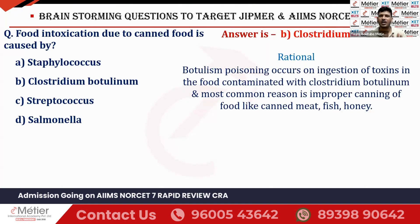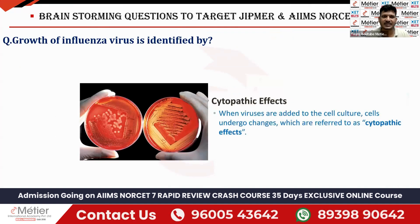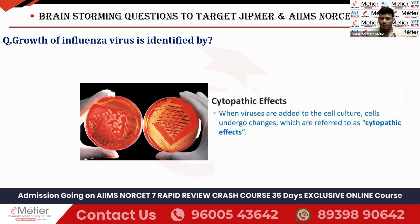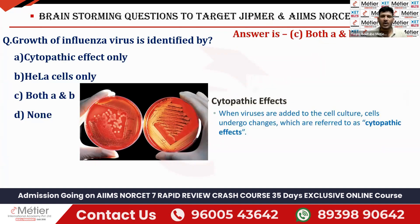The next question: the growth of influenza virus is identified by? Four options: cytopathic effect only, HeLa cells only, both A and B, or none. The right answer is option C — both A and B. To understand why, you need to know about cytopathic effect and HeLa cells. This question has been asked again in AIIMS NORCET exams.